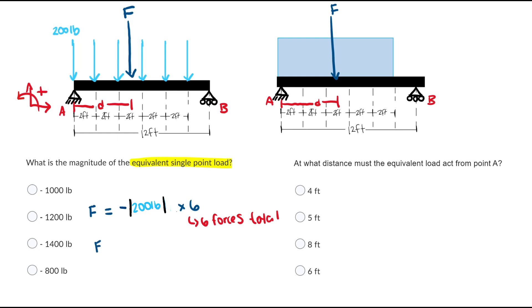The equivalent force will be 200 pounds times six because we have six total forces. So that means that F is equal to negative 1,200 pounds. Making this the correct answer.